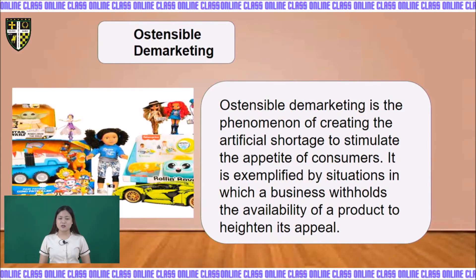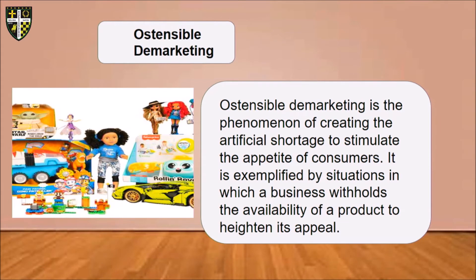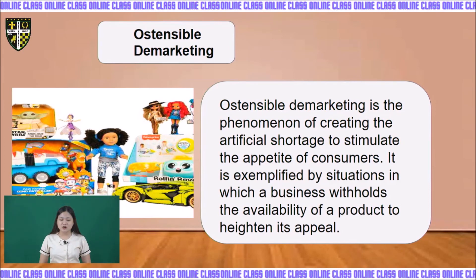The last type is ostensible demarketing. Ostensible demarketing is the phenomenon of creating an artificial shortage to stimulate the appetite of consumers. It is exemplified by situations in which a business withholds the availability of a product to heighten its appeal. For example, many toys — especially during the holiday season — are kept in limited supply so that consumers start stocking these hard-to-get products. This opens up high-end toy sales during the Christmas season, as the difficulty consumers face in purchasing the item increases its value in their eyes. Therefore, the demand is actually raised rather than lowered, and they are sold at a high price.